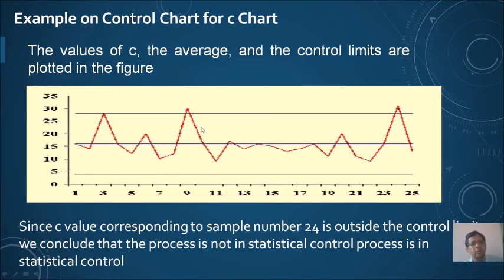You can see that there are two values which go outside the control limit. Since the values are not lying within the control limit, we conclude that the process is not in statistical control.